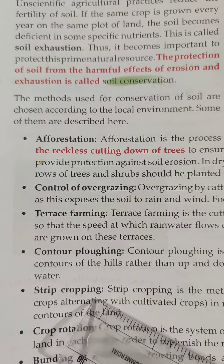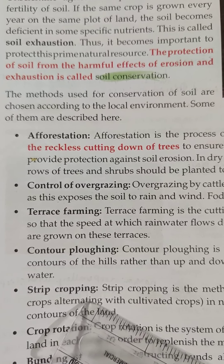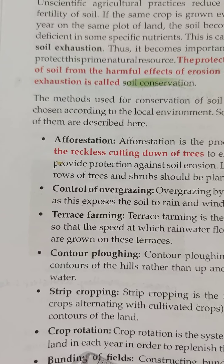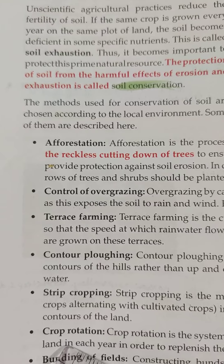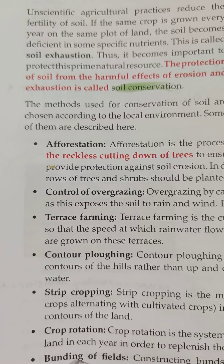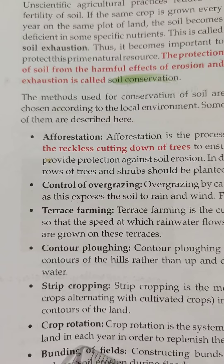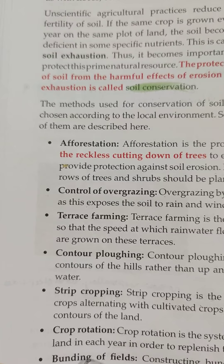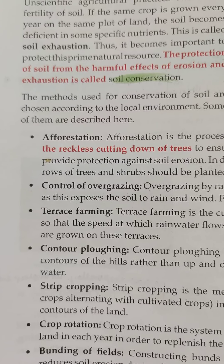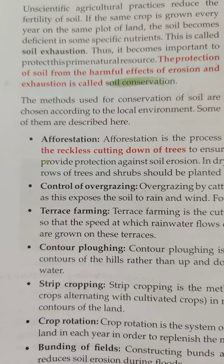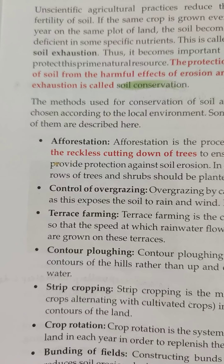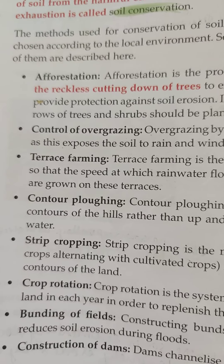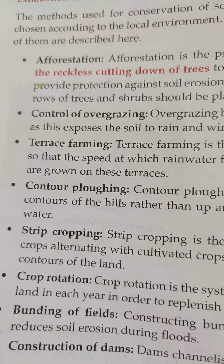Strip cropping is a method of growing different crops in different seasons or alternate years. It is a system of cultivating different crops on the same land each year in order to replenish the minerals and salts present in the soil. Bunding of fields — construction of bunds along fields located along river banks — also reduces soil erosion. Construction of dams also channelizes river water and prevents flooding.